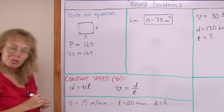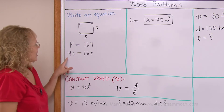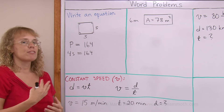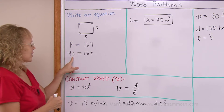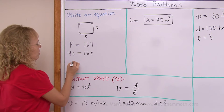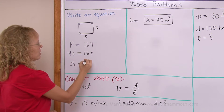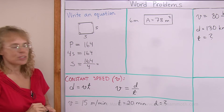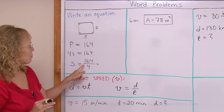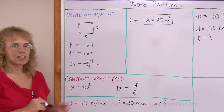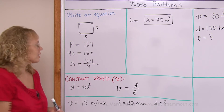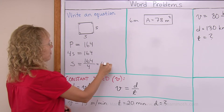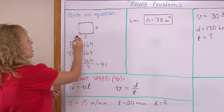To solve it — since S is multiplied by 4, we undo that by dividing both sides by 4. 4S divided by 4 leaves us S alone. On this side we need to calculate 164 divided by 4. We don't need long division for that, just mental math: 160 divided by 4 is 40, and 4 divided by 4 is 1. Add those to get 41. So 41 units is the side of the square.